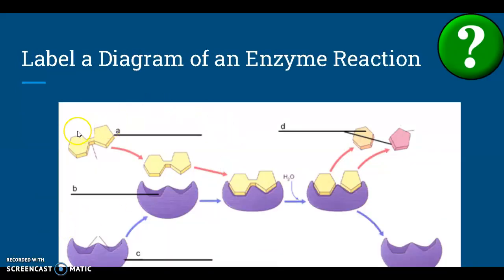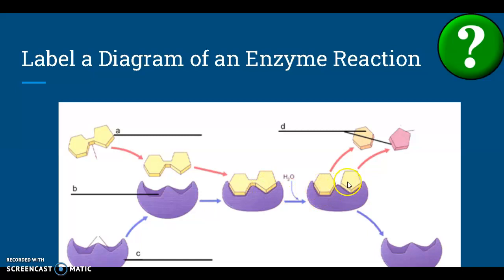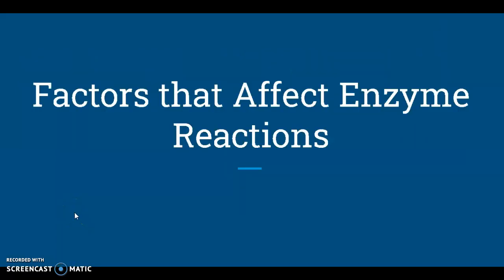So we have a substrate molecule and an enzyme. That substrate will bind to the enzyme at the active site — it'll fit into that little pocket — and then the enzyme will split apart the substrate into products. When you did your toothpick activity, you started thinking about some factors that could affect how enzyme reactions work, and we're going to talk about those today.